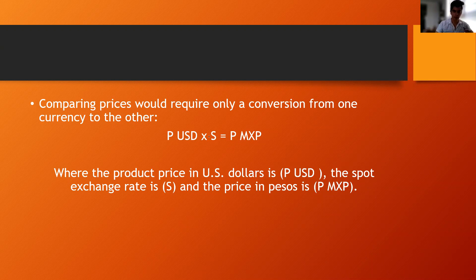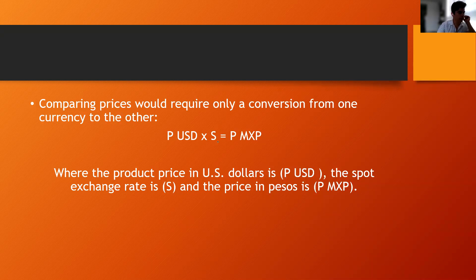So it means that if this theory is correct, if you multiply or divide the price in the foreign country times the spot, you will get the price in the local currency. An application for this is if I isolate the spot, I will get something like this: spot equals the local price over the foreign price.